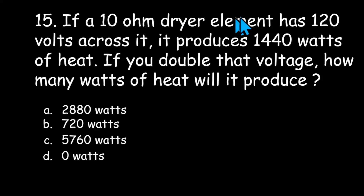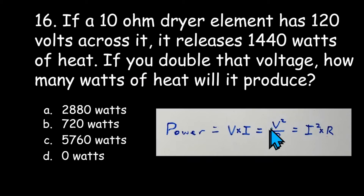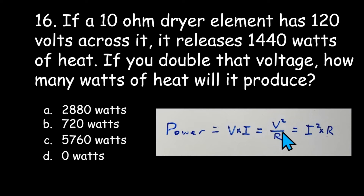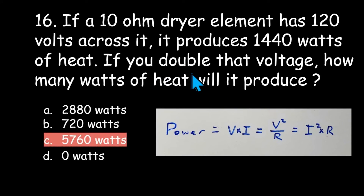Number fifteen: if a 10 ohm dryer element has 120 volts across it, it produces 1440 watts of heat. If you double that voltage, how many watts of heat will it produce — 2880, 720, 5760, or zero watts? We use the formula P = V²/R. If you double the voltage, you quadruple the wattage. So instead of 1440 watts, you're going to have 5760 watts by going from 120 to 240 volts. That's not intuitive, but it's very important.